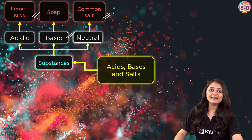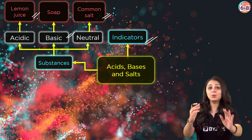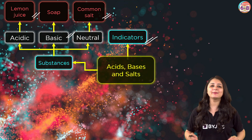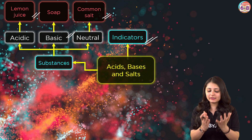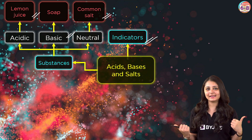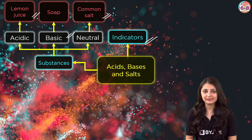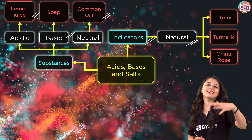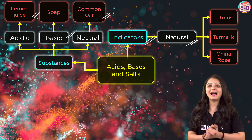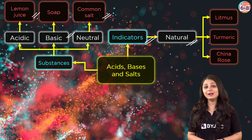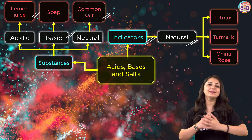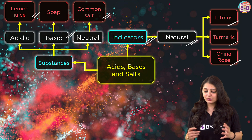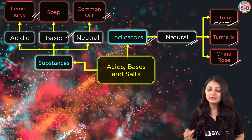That's where indicators come in. Indicators are special types of substances that are used to test whether a given substance is acidic or basic. Some indicators occur naturally — we call them natural indicators. Examples include litmus, turmeric, and china rose.